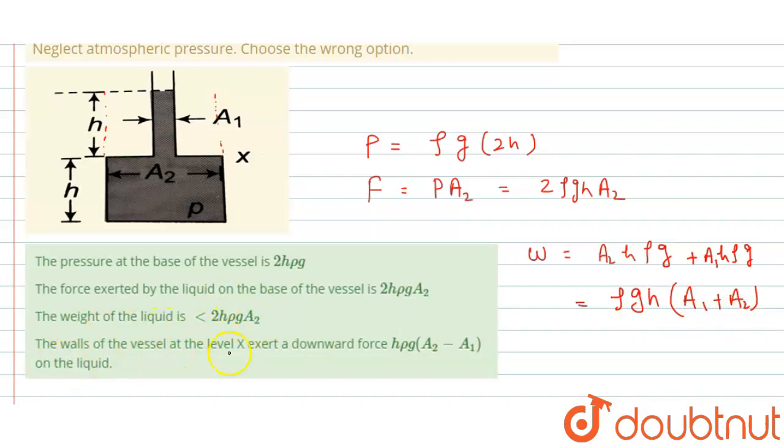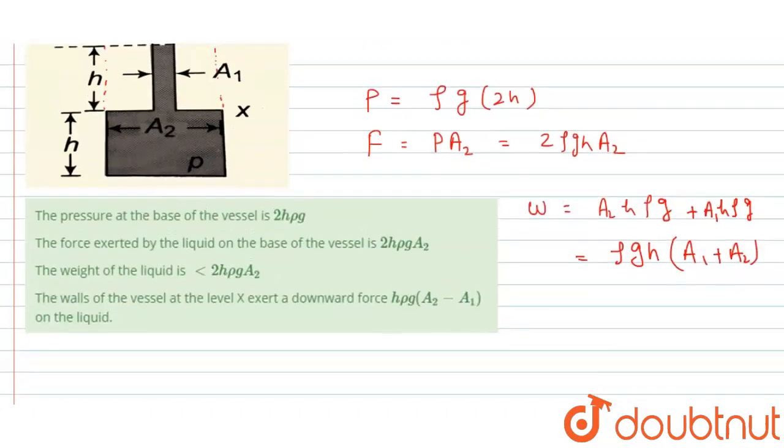The wall of the vessel at level x exerts a downward force hρg into A2 minus A1. This is incorrect option. At this level, at x level, pressure is ρgh because from this level height of liquid is h. That means at this level, pressure of liquid is ρgh. Force exerted by: